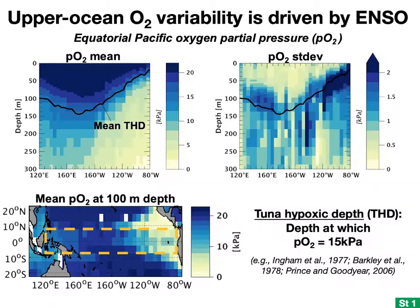Through analysis of this World Ocean Database data, we showed for the first time that interannual upper ocean oxygen variability is really strongly driven by ENSO throughout the entire tropical Pacific. These figures show longitude-depth cross sections of the means and temporal standard deviations of oxygen partial pressure, or PO2, averaged over the equatorial Pacific between 7.5°N and 7.5°S. I'm showing oxygen in terms of partial pressures rather than concentrations, because it's really partial pressure that drives oxygen transfer through animal tissue — that's the condition the animals actually feel.